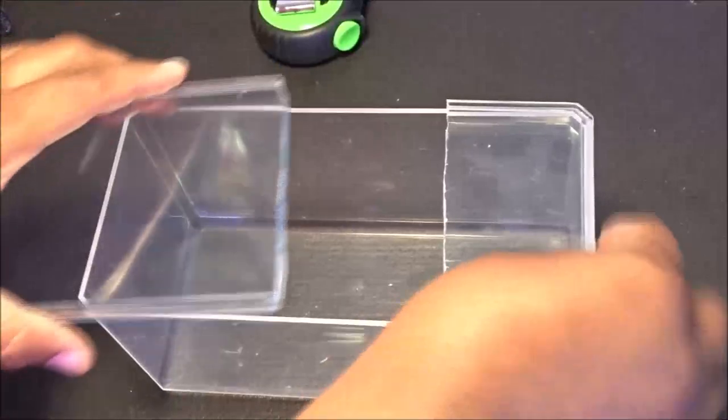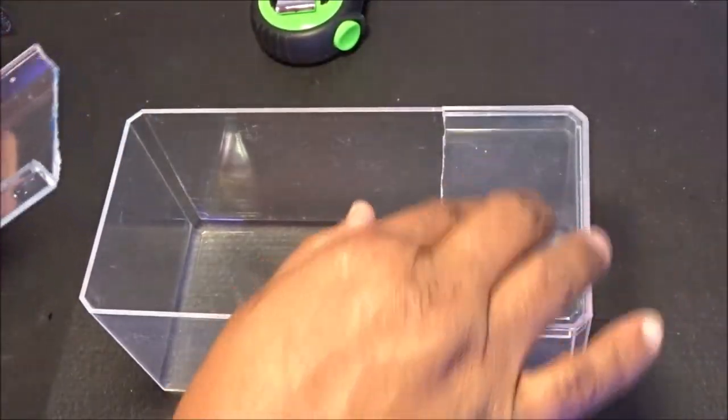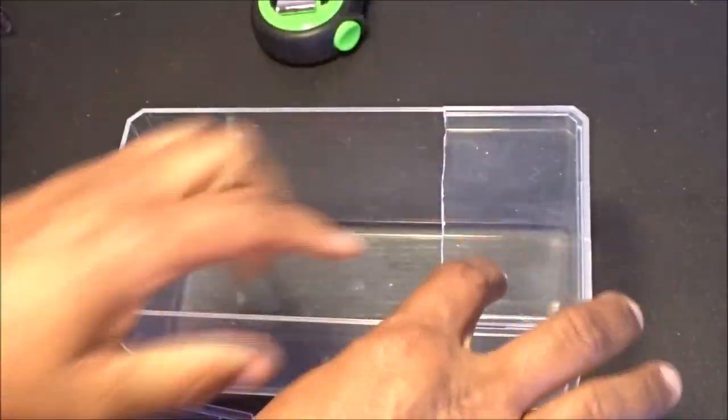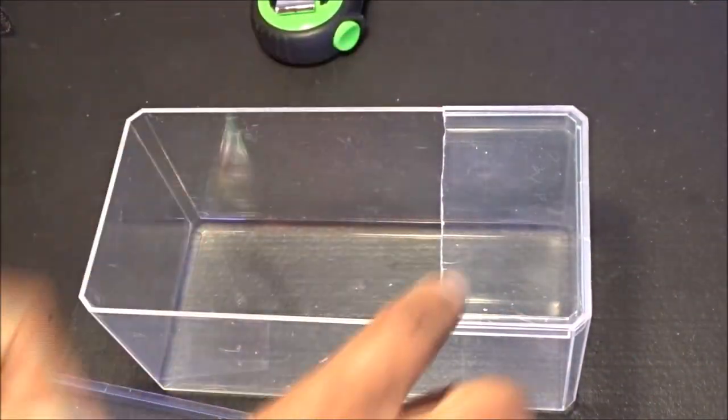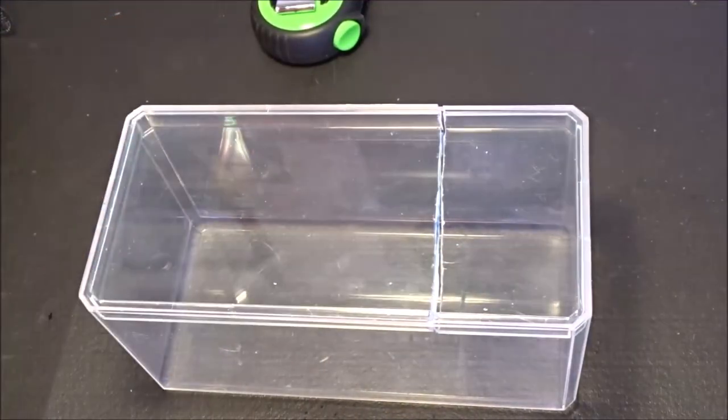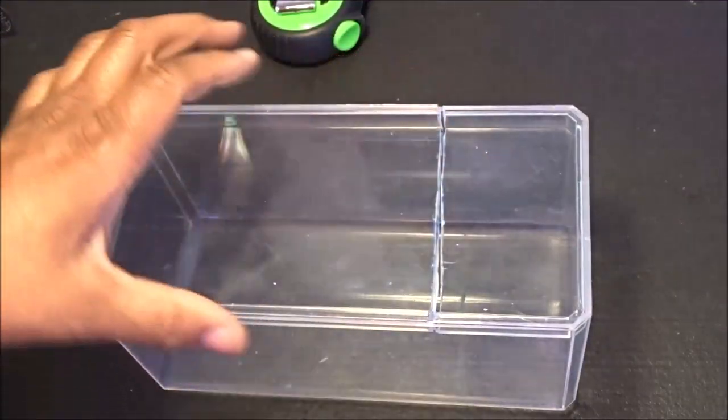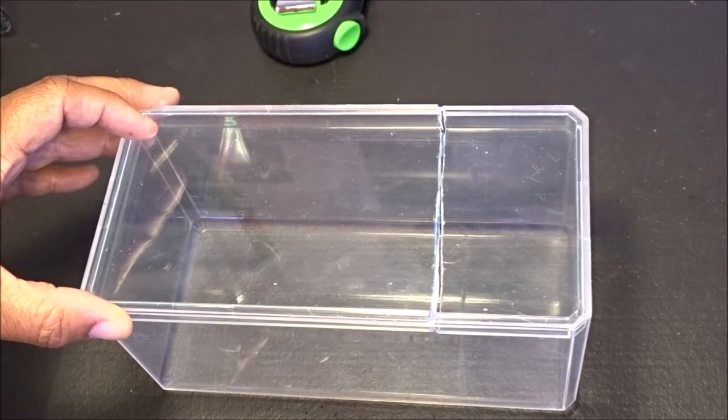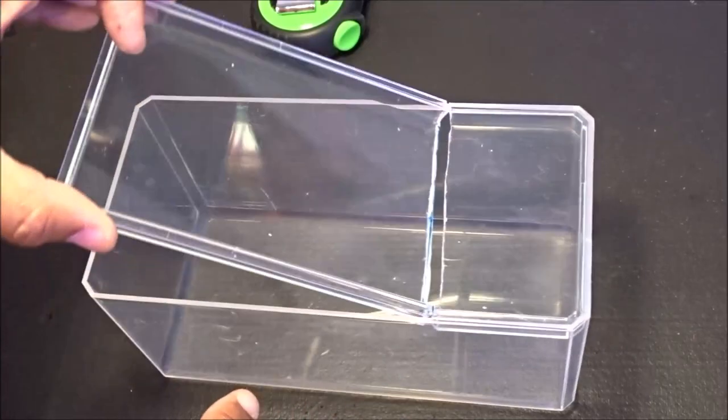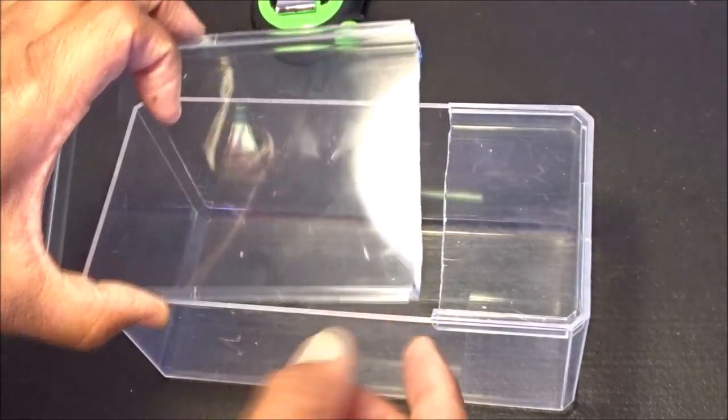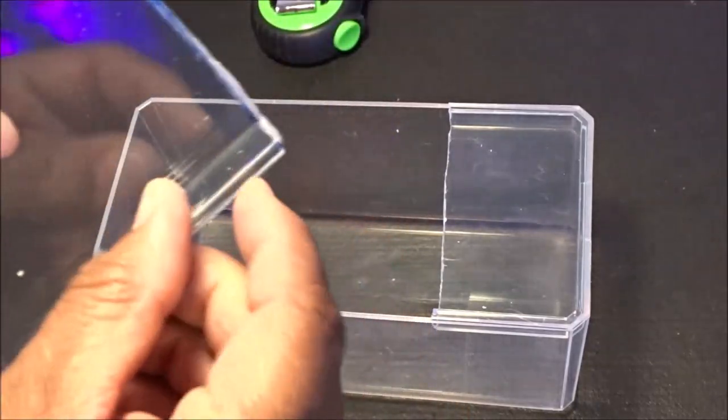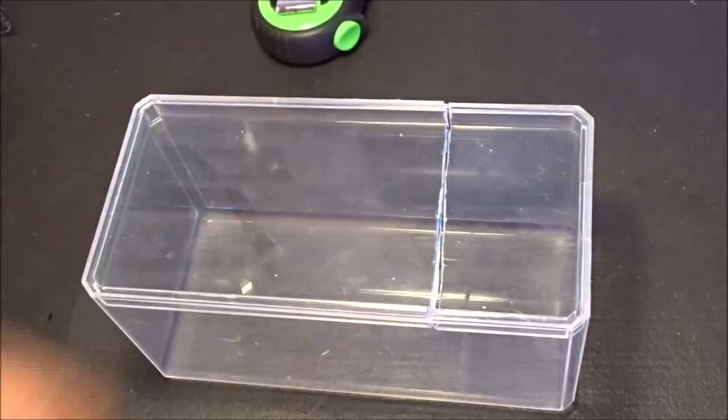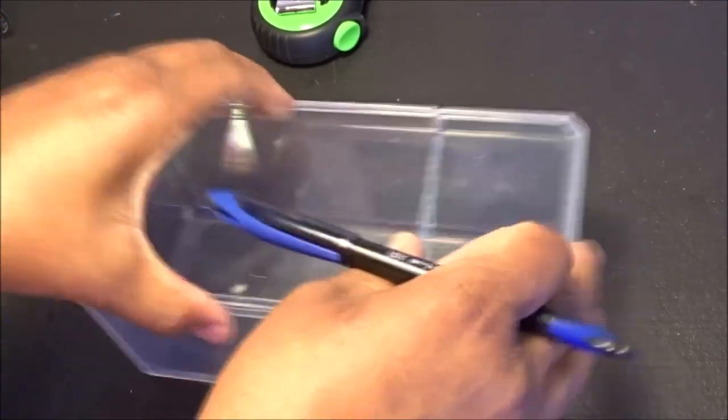So now to check the fit. Now, that's pretty snug in there. That's okay. This right here is going to be the bottom anyway. So that's going to be for your reservoir. Now, the next thing I need to do is, in order for the hinge to work on this properly, I'm going to have to take some of this lip off. Some of this lip here on both sides. So I'm going to make some marks. That way the hinge will work properly on this.